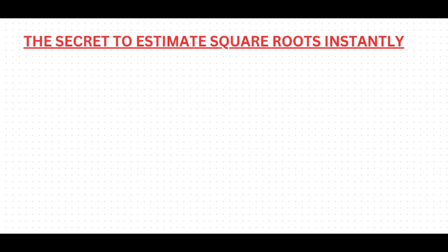Let's see how we find square roots of non-perfect squares instantly. Say you're finding the square root of 17. You all know that 17 is a non-perfect square — 25 is a perfect square because it's 5 squared, 16 is a perfect square because it's 4 squared, but 17 is a non-perfect square. Now let's see how we find the square root of 17.